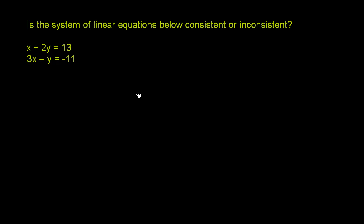So to answer this question, we need to know what it means to be consistent or inconsistent. A consistent system of equations has at least one solution. And an inconsistent system of equations, as you can imagine, has no solutions.